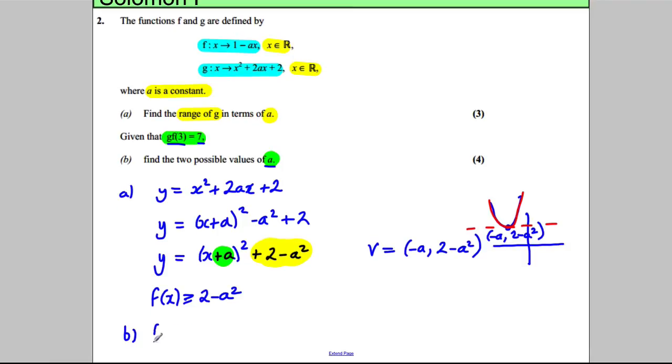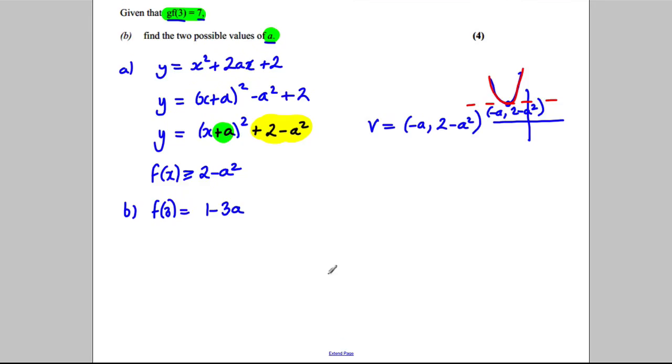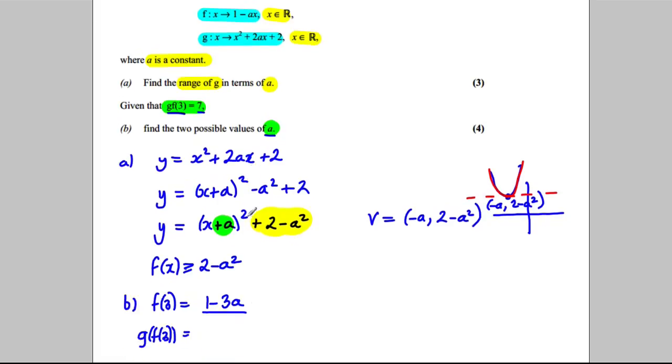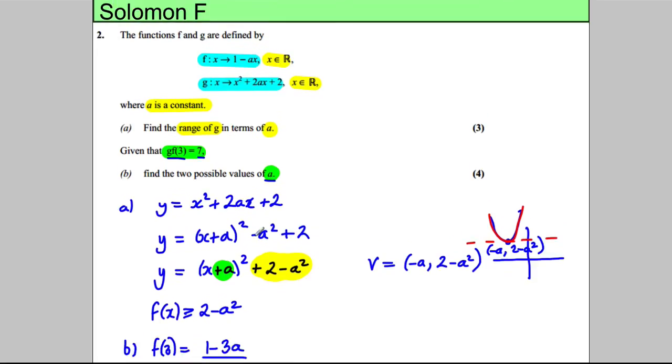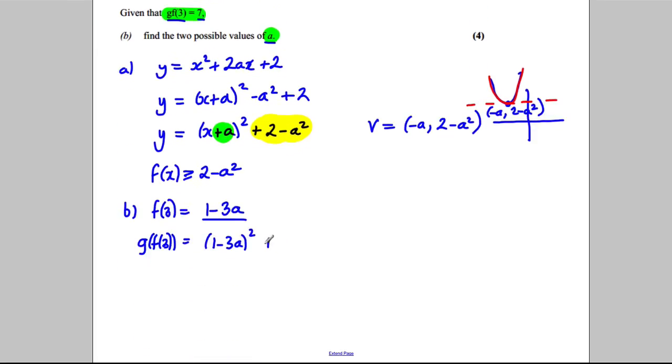So let's firstly do f of 3. f of 3 is when we put 3 into this function here, so it would be 1 subtract 3a. Now we're going to work at G of f of 3, so we're going to put this into the G function. Where we see x, we're going to have 1 subtract 3a all squared, add 2a multiplied by 1 subtract 3a, and then add 2.